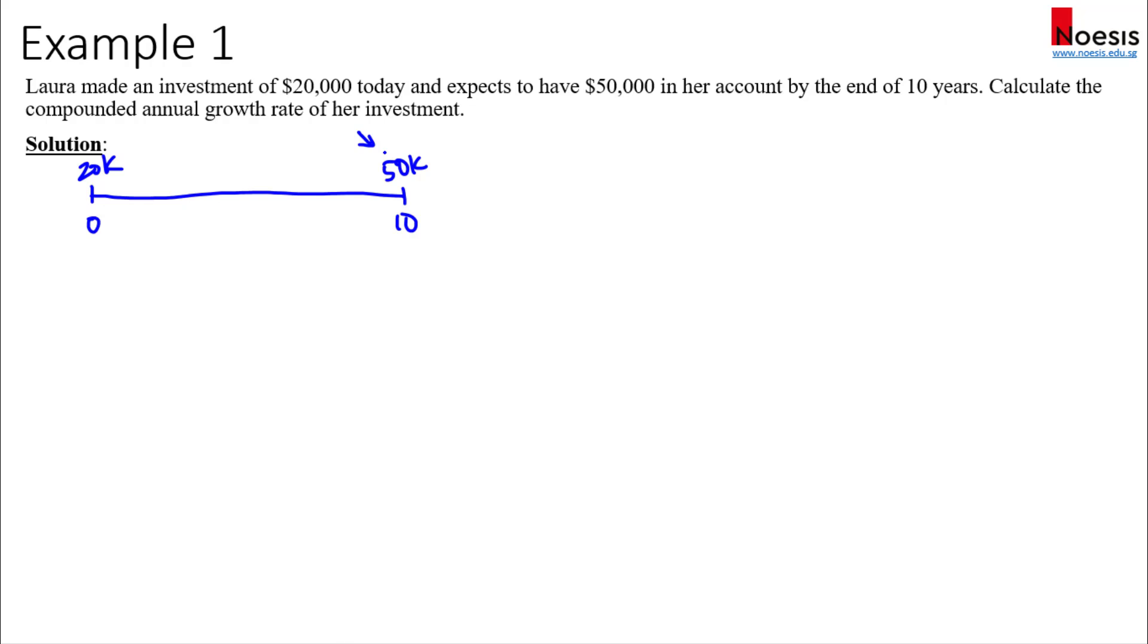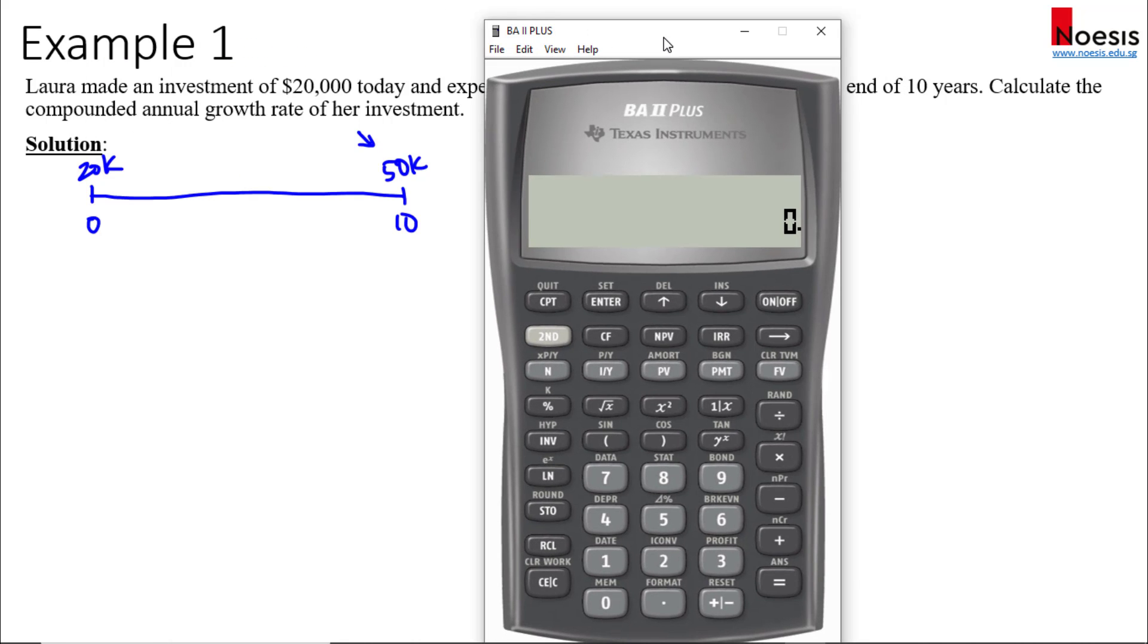Using your financial calculator, press 2nd FV to clear the time value of money worksheet. We'll first key in $20,000 as a negative PV since we invested this. Then N will be equals to 10 for 10 years. Then we have PMT which is zero since there's no annuity amounts in the middle, and then future value will be $50,000.